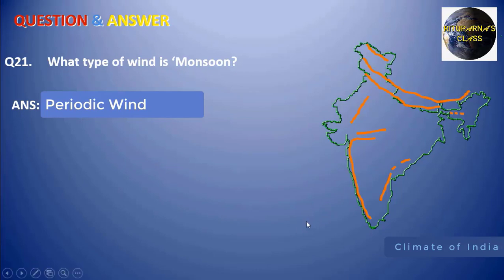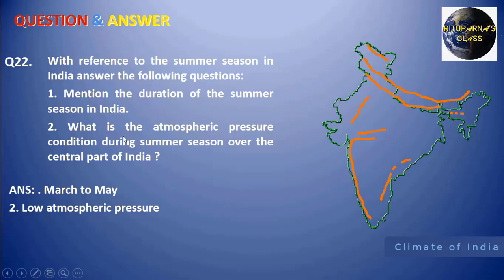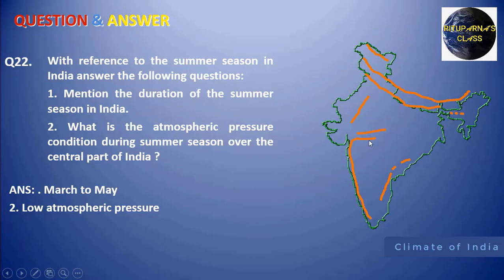Next: what type of wind is the monsoon? It is a periodic wind — it blows periodically: from sea to land during summer and from land to sea during winter. Regarding the summer season in India: the duration is from March to May. The atmospheric pressure condition during summer over the central part of India is low pressure, which attracts the monsoon winds from the high pressure region over the sea.